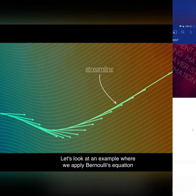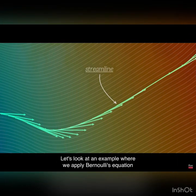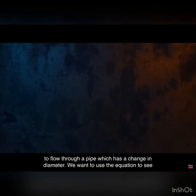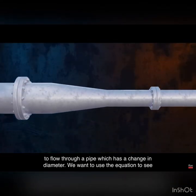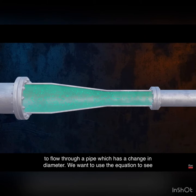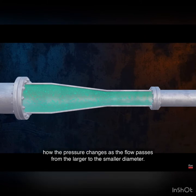Let's look at an example where we apply Bernoulli's equation to flow through a pipe which has a change in diameter. We want to use the equation to see how the pressure changes as the flow passes from the larger to the smaller diameter.